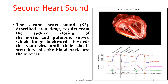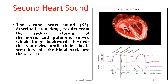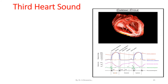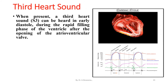The second heart sound, S2, described as a 'dub', results from the sudden closing of the aortic and pulmonary valves, which bulge backwards towards the ventricles until the elastic stretch recoils the blood back into the arteries. Abnormalities of S2 include alterations in its pattern and changes in the pattern of splitting.